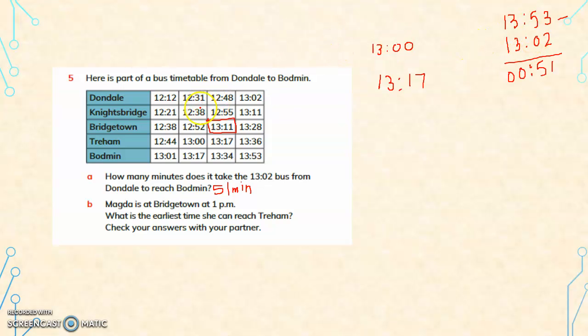You can take a bus or train only after you reach the station. So look at the time that you have reached the station, then look for the timing after the time you have reached the station. Look for whichever station you are at — find the time you arrived, then look for the next available timing.